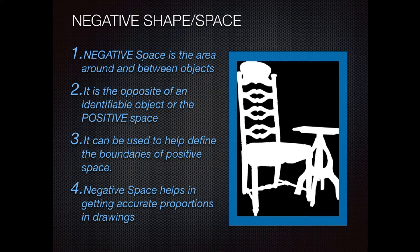Negative space is the opposite of an identifiable object, or the positive space. Just remember: the stuff is the positive, and the air around the object is the negative.